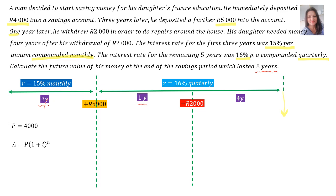Into the compound interest formula: A equals P bracket one plus I to the power of N. In P's place, 4000 bracket one plus — the rate is 15%, therefore 0.15, but calculated monthly, so divide by 12. The duration was three years, but monthly, therefore times by 12. When you slot that into your calculator, A equals 6,255 rand and 78 cents.